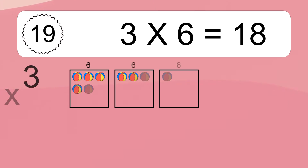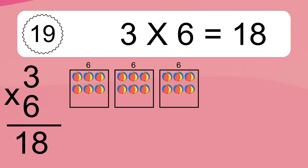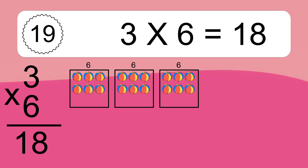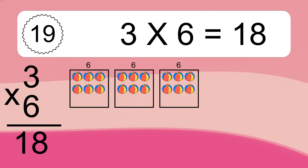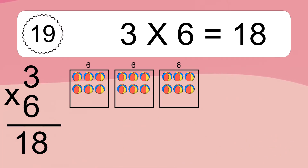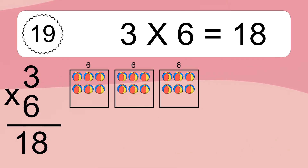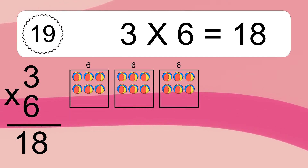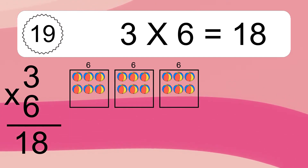3 times 6 equals what? 3 times 6 equals 18. We have 3 boxes, and each box has 6 colorful balls inside. If you count all the balls in all the boxes together, you will have 3 times 6 balls. This equals 18 balls.